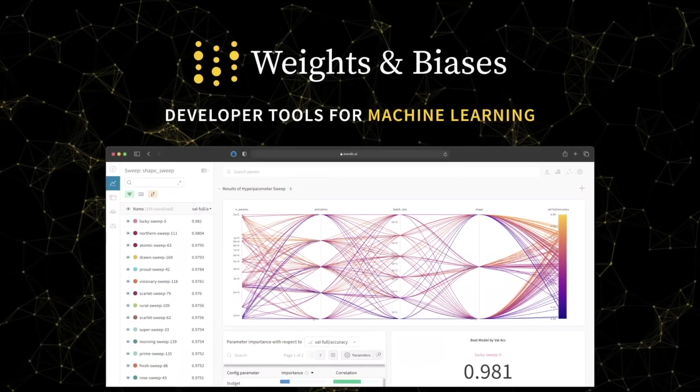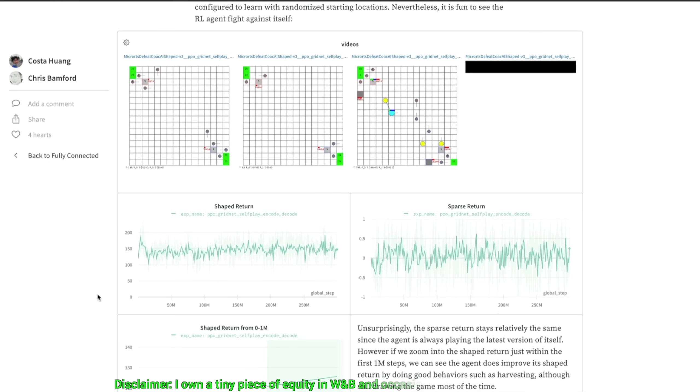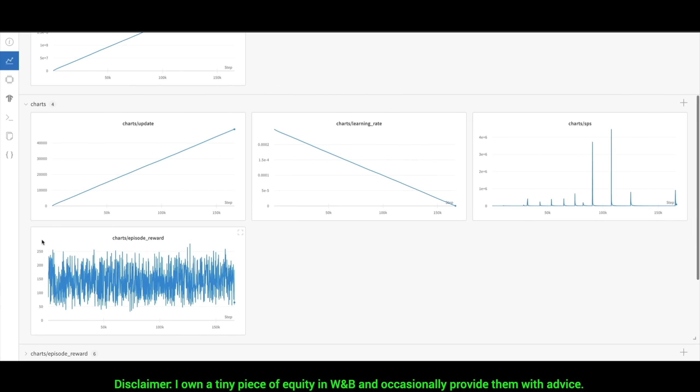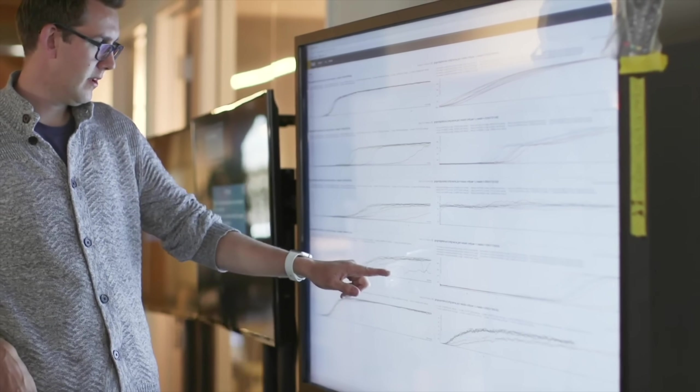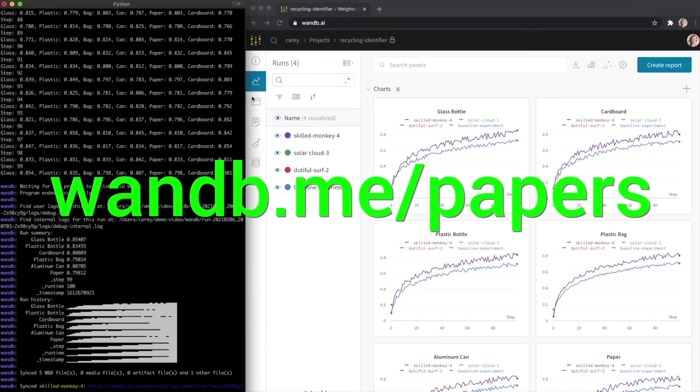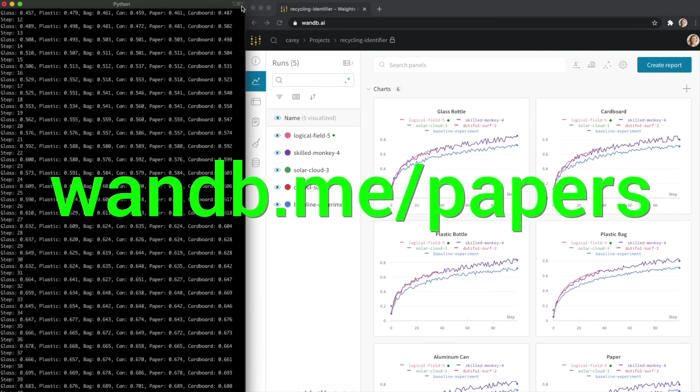Experiment tracking, model evaluation, and production monitoring for your deep learning projects and LLM apps. This is what Weights and Biases does, and it is the best! Everyone is using it! Try it out now at wnb.me/papers or click the link in the description below!